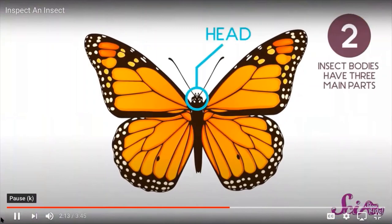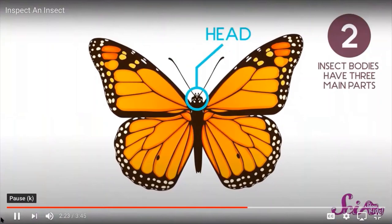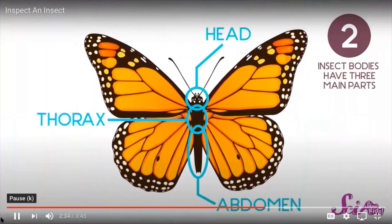Up in front there's the head — it's where the eyes and the mouth are, and usually there's a pair of long, spindly feelers on top of it that the insect uses to sense its surroundings. These are called antennae. Below the head is the middle section called the thorax. This is where you find the legs, and sometimes wings, but not all insects have wings. And bringing up the rear is the abdomen — this is the part where the insect digests food. And if it has a stinger, you'll find it here at the very end.